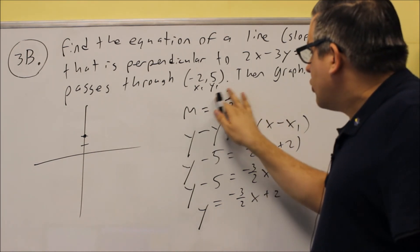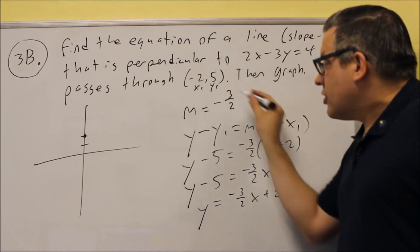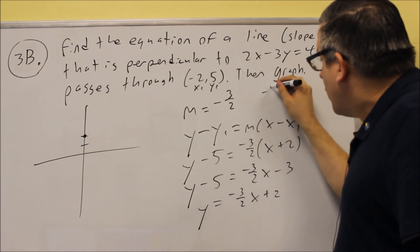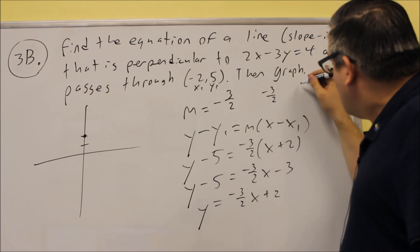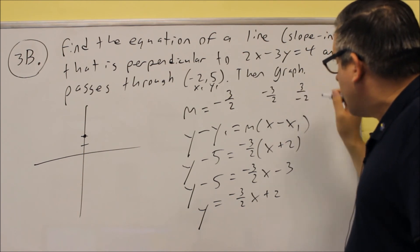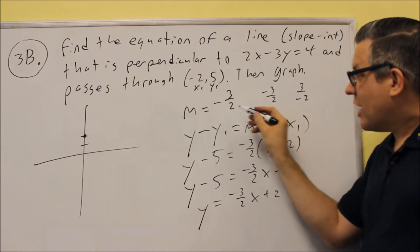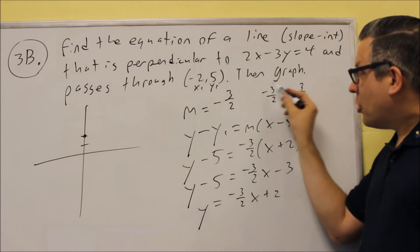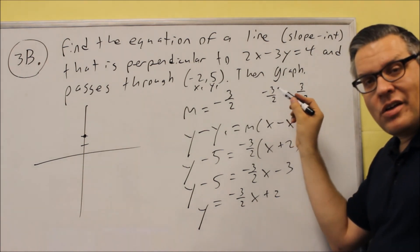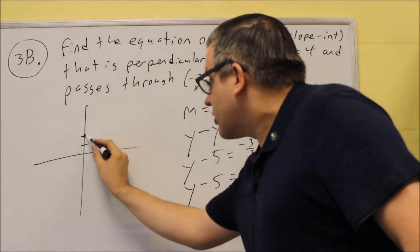Now the slope being the way it is here, it's written as negative 3/2. That could be written as negative 3 over 2 or 3 over negative 2. So you can use your slope as any of these 3. I'm purposely choosing the negative to be with the 3, and that way I can just go down 3.